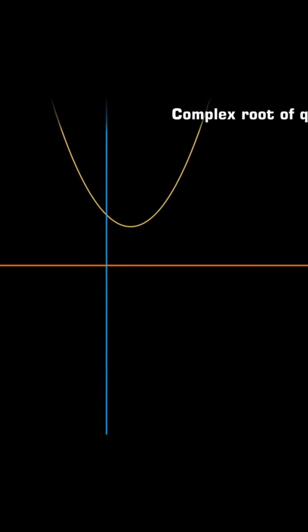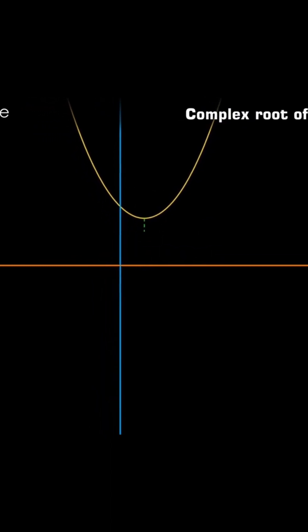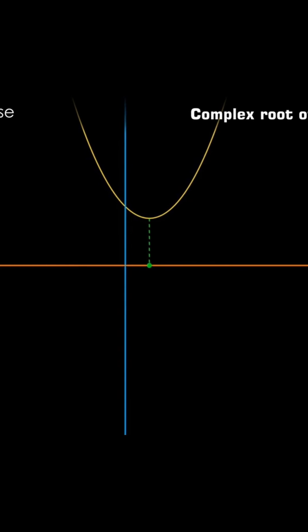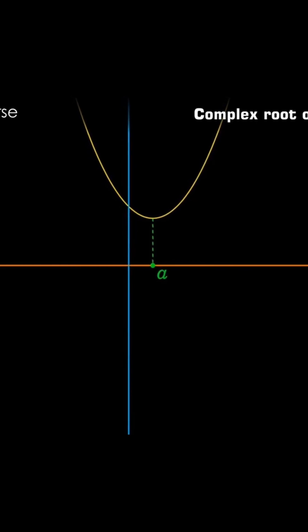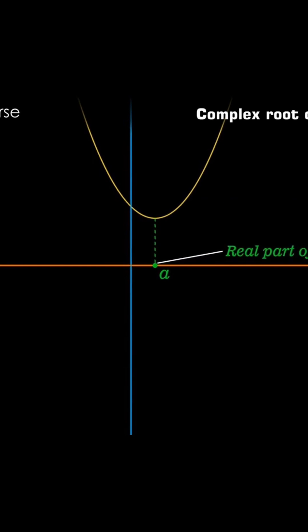If the graph does not intersect the x axis, then draw a vertical line passing through the vertex of the parabola. The value of x where this line intersects the x axis gives the real part of the root.